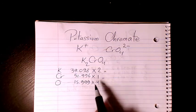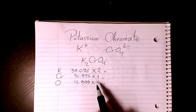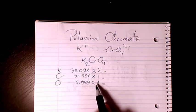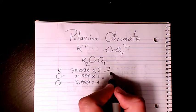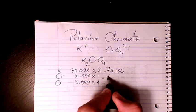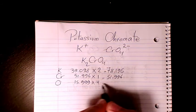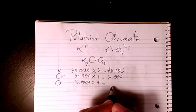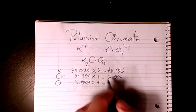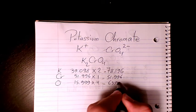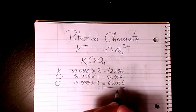So then you multiply them. It's gonna be 39.098 times two, that makes it 78.196. Then we have 51.996, and here we have 15.999 times four, which is 63.996. Then you add them all.